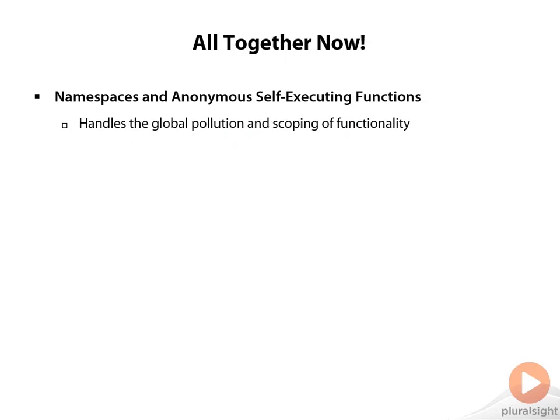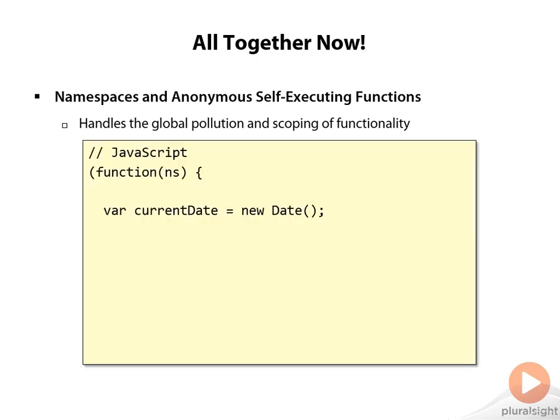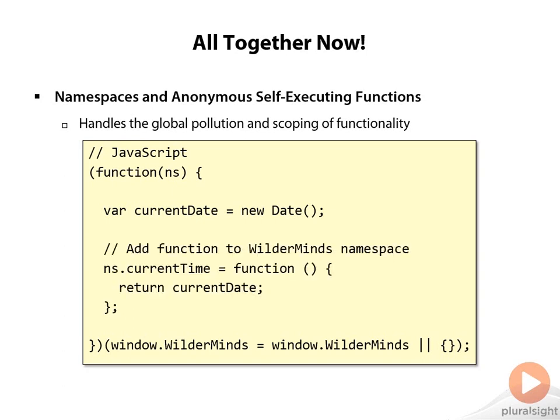Now let's bring together namespaces and anonymous self-executing functions to really solve the global pollution problem. We start with a function where we're passing in a namespace that we're going to use to define and add things to it for other parts of our code. Passing in the Wildermines namespace — prefixed with window so JavaScript knows we're adding it to the global namespace — we're saying if Wildermines has already been defined on window, pass that in; otherwise, set the Wildermines namespace to an empty object. Inside the function, we then use that namespace to add our new functionality — in this case, a function called current time.